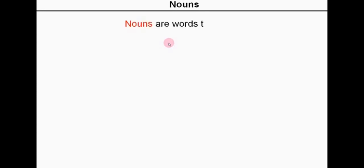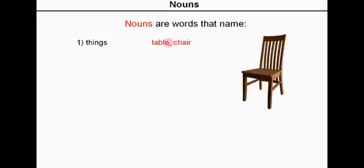Nouns. Nouns are words that name things. So if you just open your eyes and look around you at everything, the words for everything you see, they are nouns. So they can name things, for example, a table or a chair.